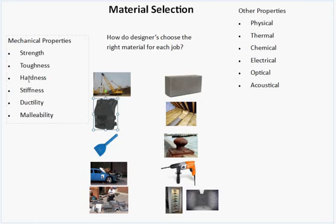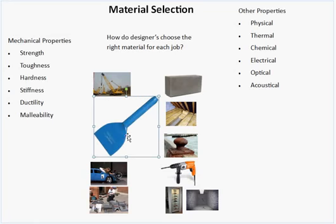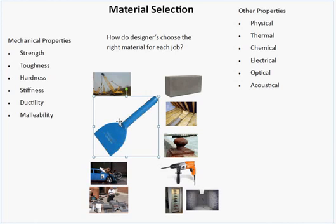The third property is hardness. There's a picture of a bolster chisel, which stonemasons and bricklayers use to break through hard materials, so the surface of the material has to be very hard. Unfortunately, with hardness you also get brittleness, so the material has to be hard but also durable enough not to crack or fracture when hit very hard with a hammer.